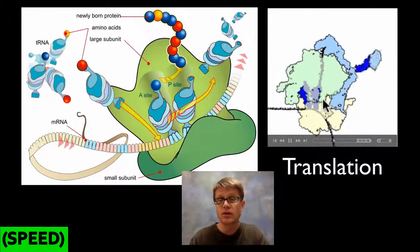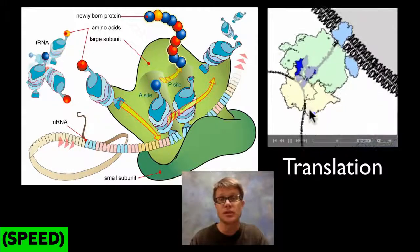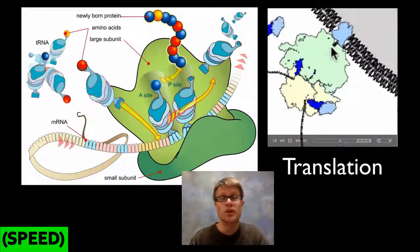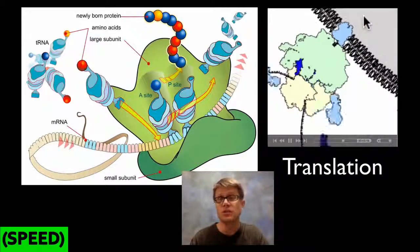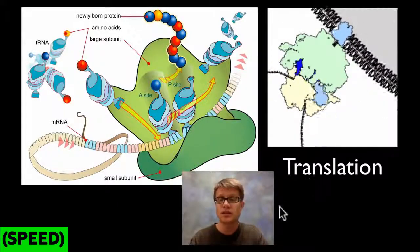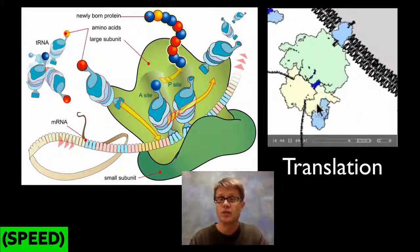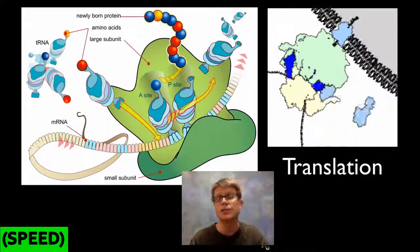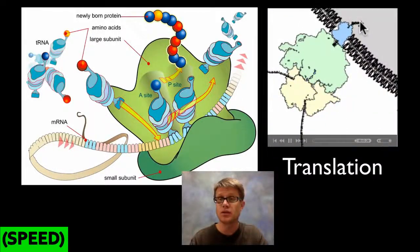Some ribosomes are bound to the endoplasmic reticulum, and the growing protein inside the large subunit actually grows into the middle of the endoplasmic reticulum, so it can be modified. This is translation. Going back to the cooking analogy, the ribosome serves the purpose of the chef — it takes all the different amino acids and puts them together to make a protein. We're translating that message into a functional protein.